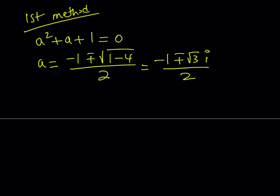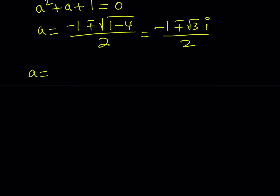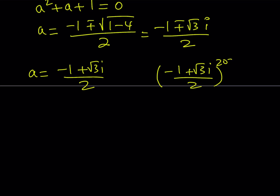The answer is not going to matter. I will go with the positive version: a equals negative 1 plus root 3i, divided by 2. Now this is a complex number. Therefore we can write it in polar form, because that is going to make the exponentiation easier since we need to raise it to the power of 2022. Obviously you don't want to take an expression like this and raise it to the power of 2022. You could use the binomial theorem, but that's going to take a very long time. That's why we're going to write it in a nicer form called the polar form.